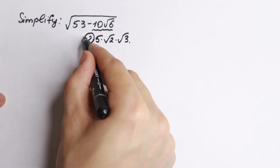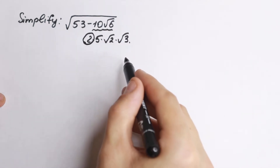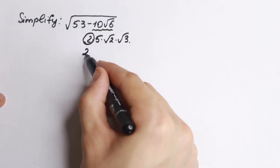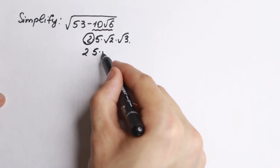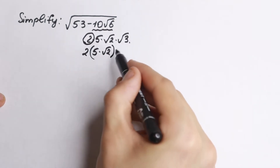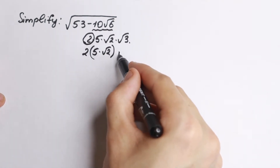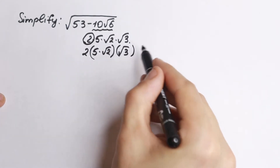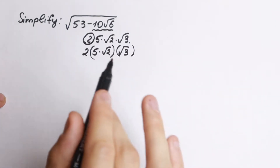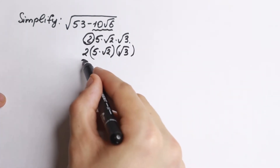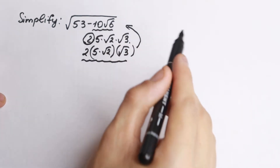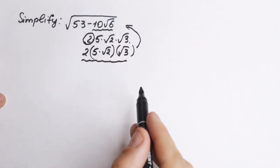But now let's group right here. I want to leave this 2 out front, and group 5 square root of 2 in parentheses, and square root of 3 as well. So we have this expression — it is the same as before, so nothing has changed for us.